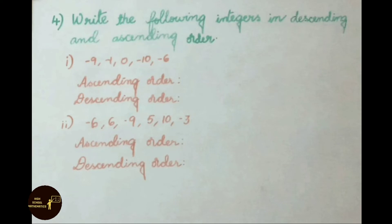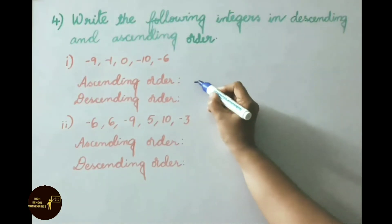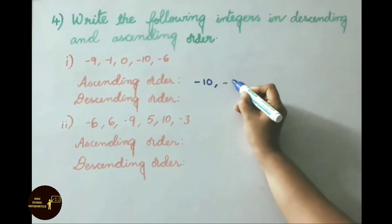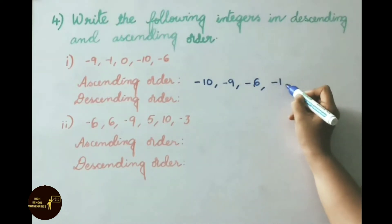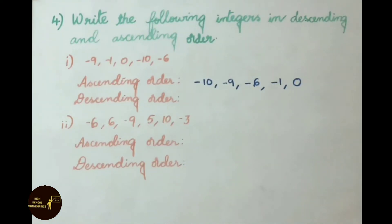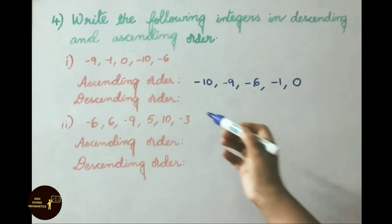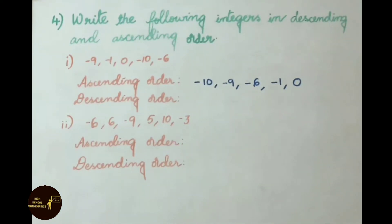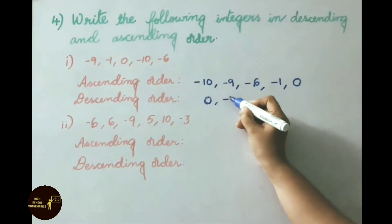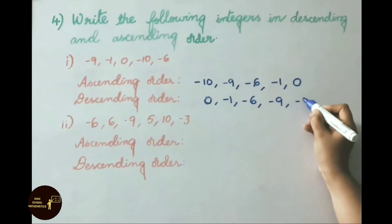Question 4: Write the following integers in ascending and descending order. First set: -9, -1, 0, -10, -6. Ascending order (small to big): -10, -9, -6, -1, 0. Descending order (big to small): 0, -1, -6, -9, -10.